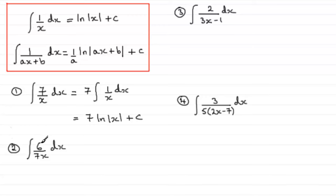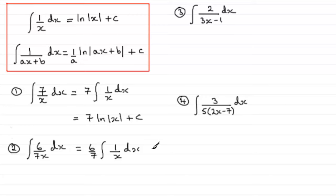For the second one, the integral of 6 over 7x with respect to x: we see 6/7 as the constant, pull it out the front, and we have the integral of 1 over x with respect to x. We know that is the natural log of the mod of x, so we get 6/7 times the natural log of the mod of x, plus the constant of integration.